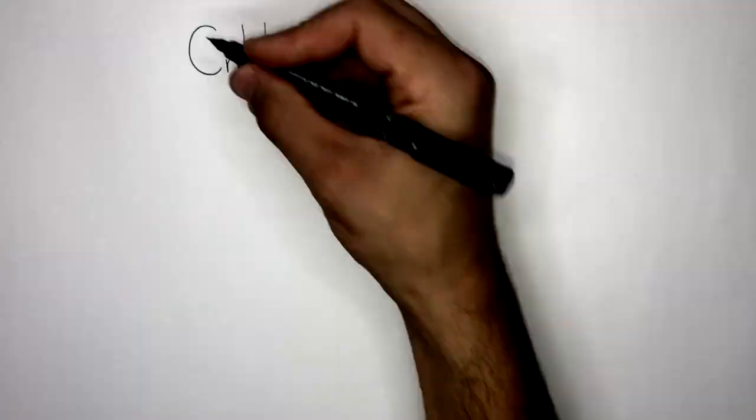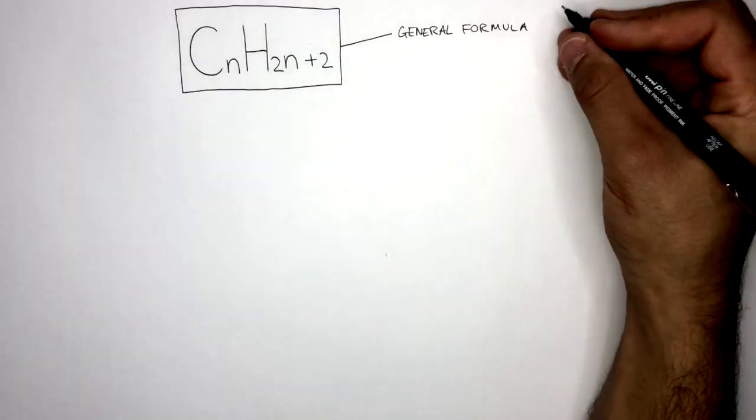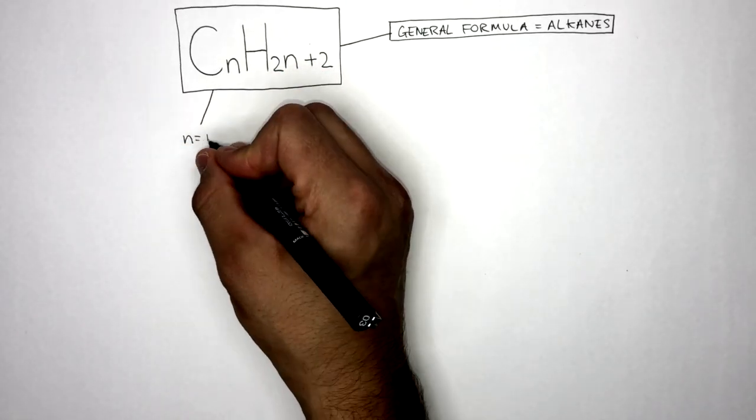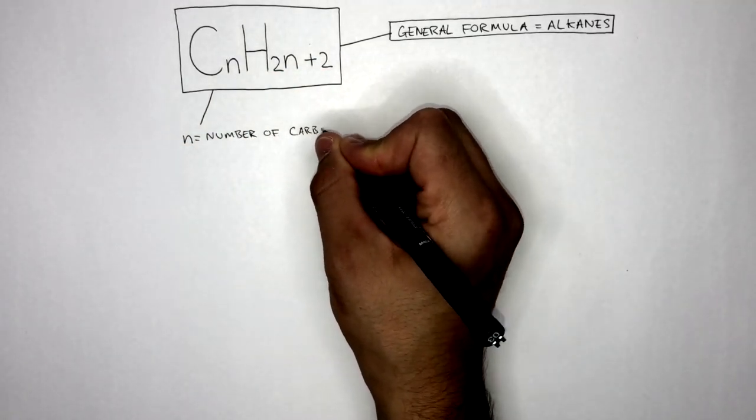CnH2n plus 2 is the general formula for alkanes. This can be used to figure out the molecular formula for any alkane. The n is equal to the number of carbon atoms.